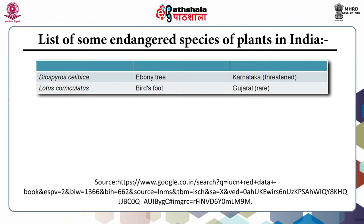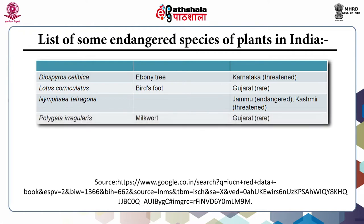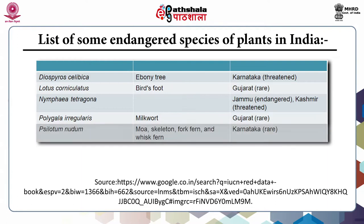Bird's Foot is rare and threatened in Gujarat state. Nymphaea tetragona is endangered in Jammu and threatened in Kashmir. Polygala irregularis, whose English name is Milkwort, has a status of rare and is found in Gujarat. Moa, Skeleton Fork Fern, and Whisk Fern — which are names for the same plant — are found in Karnataka state and their status is rare.